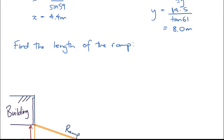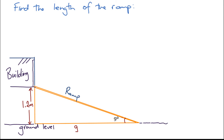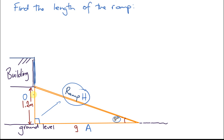Let's have a look at an actual example now. We need to find the length of the ramp. We have a ramp, a building, and ground level. We know the angle between the ramp and the ground, and this must be the right angle here. So labeling our right-angle triangle: opposite the right angle is the hypotenuse side; the ground level side is the adjacent side because it's adjacent to both the angle and the right angle; and the 1.2 meters will be the opposite side. We're trying to find the length of the ramp, and we're given the height of 1.2 meters and the angle.